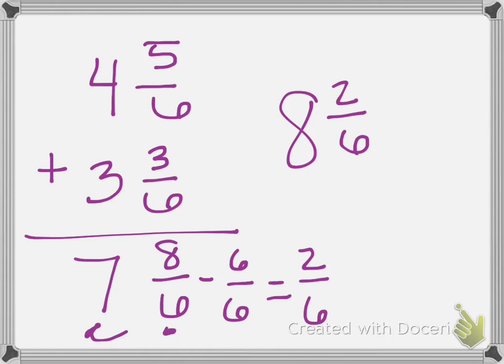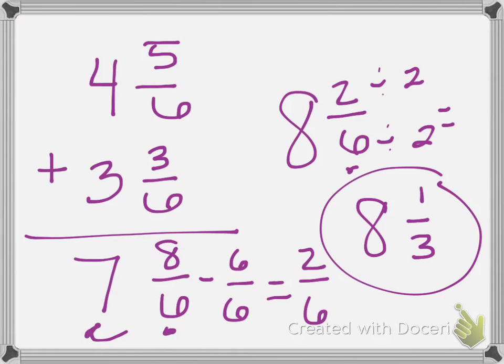Now I told the kids they can leave this, but they could or should notice that 2 sixths could be reduced or simplified. So I divide by 2 on the top and the bottom, which leaves me with 8 and 1 third as my final answer.